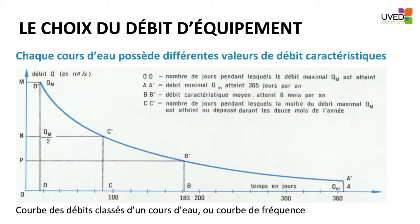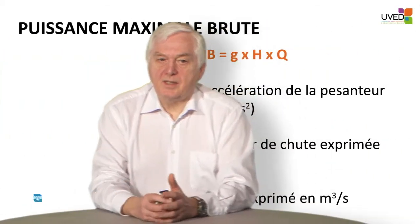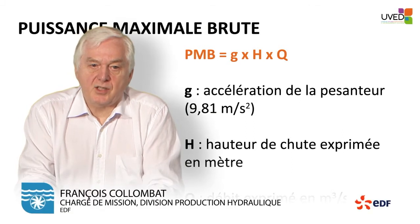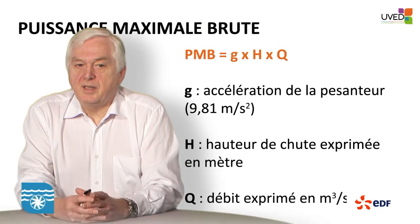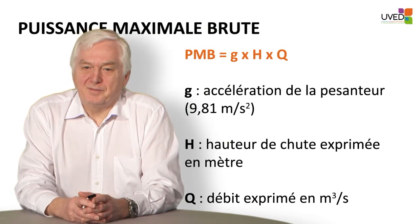Before the power plant is designed, it is necessary to define the best technical-economic value. The flow we are interested in is the average annual flow — BB prime — the characteristic average flow six months per year. If we have this type of flow six months a year, this will be the figure we rely on to design the power plant. Once the head H has been determined as well as the flow Q, it is relatively easy to proceed.